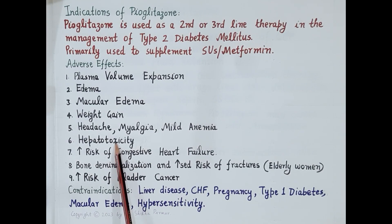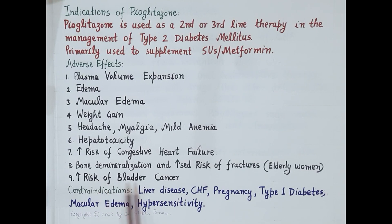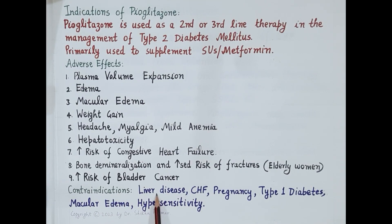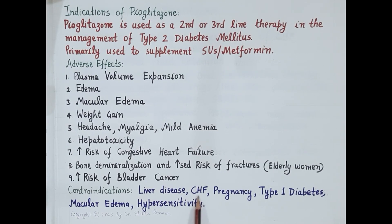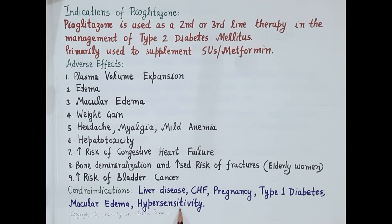Since pioglitazone increases plasma volume, it increases the risk of congestive heart failure. It can also cause bone demineralization, which increases the risk of fractures, especially in elderly women. Pioglitazone can also increase the risk of bladder cancer. Regarding contraindications, since pioglitazone is extensively metabolized in the liver, it is contraindicated in liver disease. Since it causes water retention, it should not be prescribed in congestive heart failure. It is also contraindicated in pregnancy, type 1 diabetes mellitus, macular edema, and in patients with known hypersensitivity to pioglitazone.